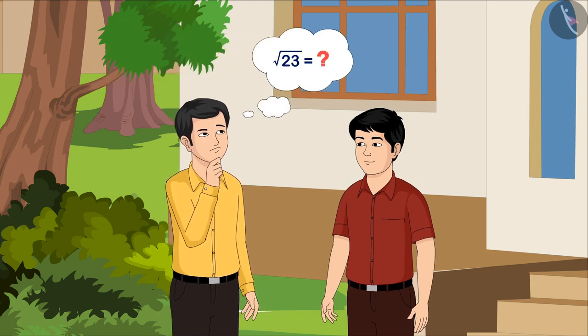So it means the distance from your house to the station will be equal to the square root of 23. But what will be the square root of 23?